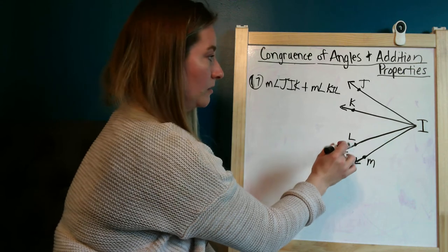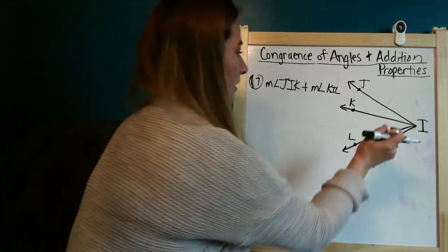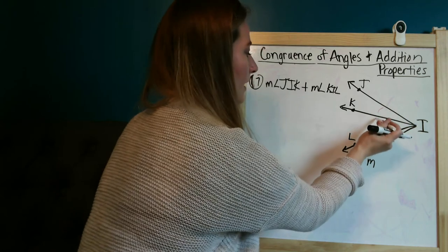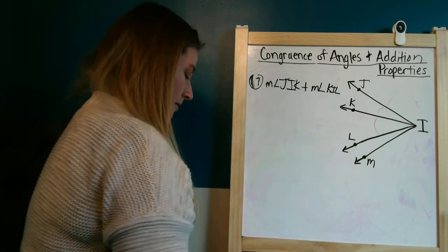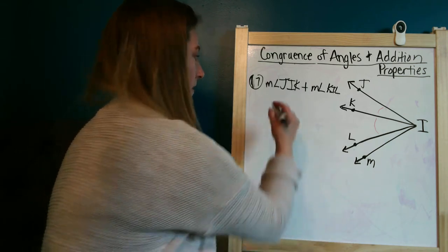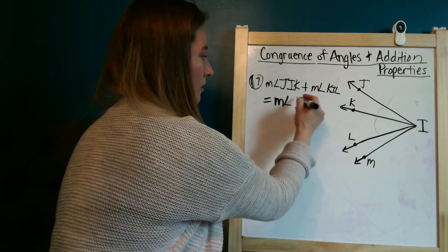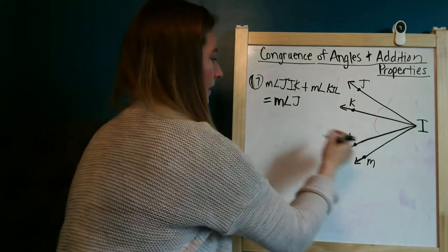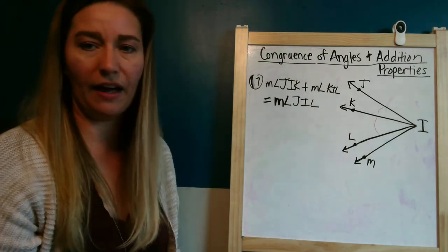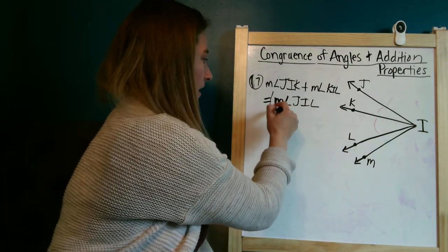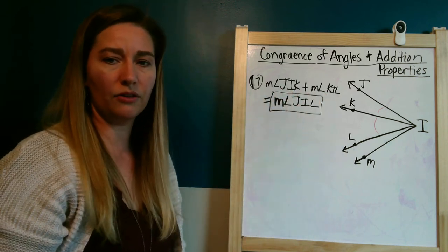And we want to name that angle. So we're going to name these two angles right here. It's JIK and KIL. And those together are going to make, we're going to say this is equal to the measure of angle JIL. So that's what you're going to be writing for that. This will be your answer right here. You're not actually finding a number measure. You're just naming the angle that it's equal to.